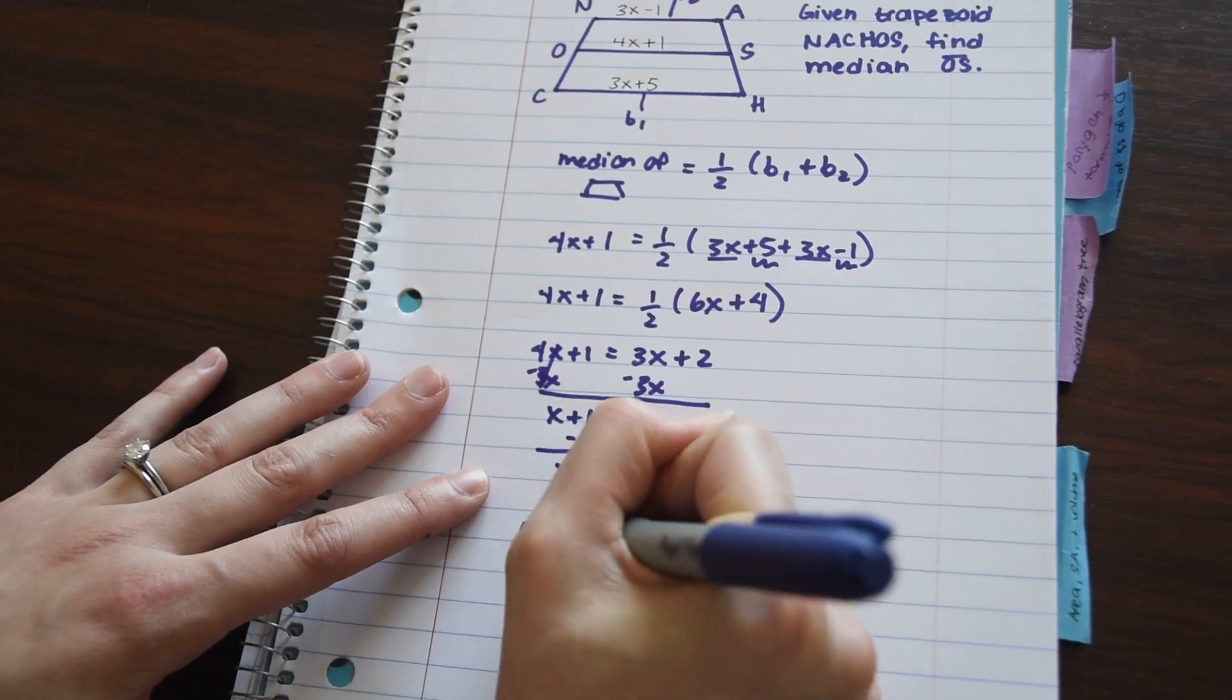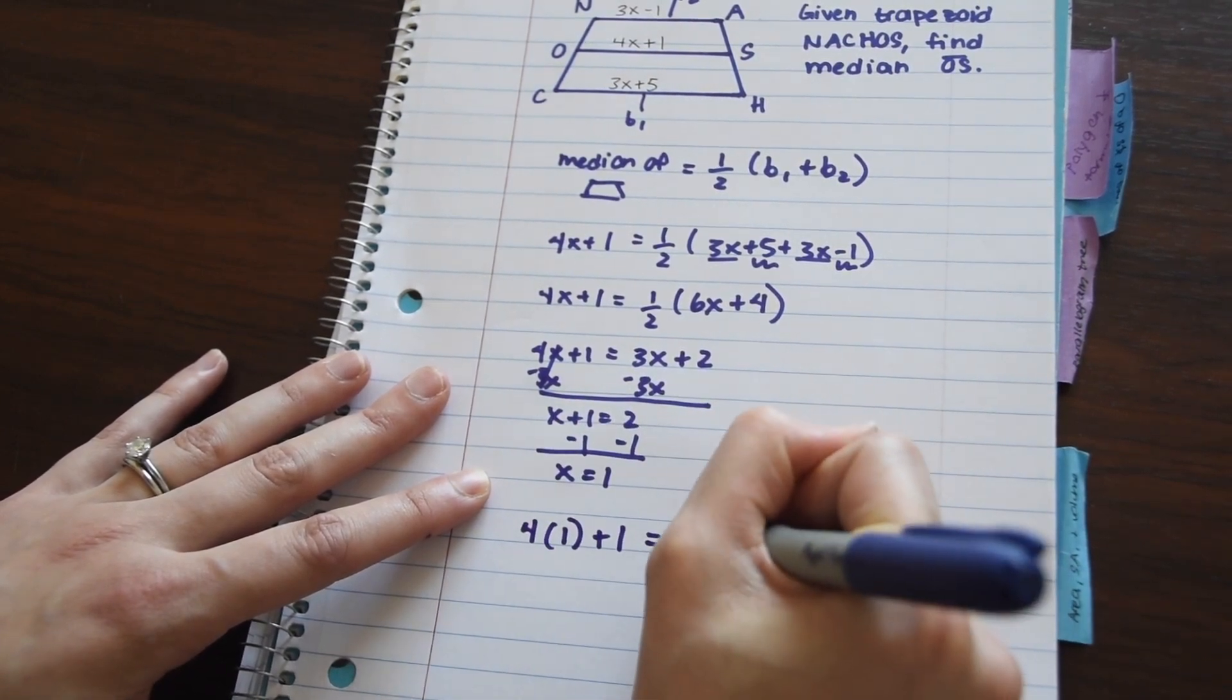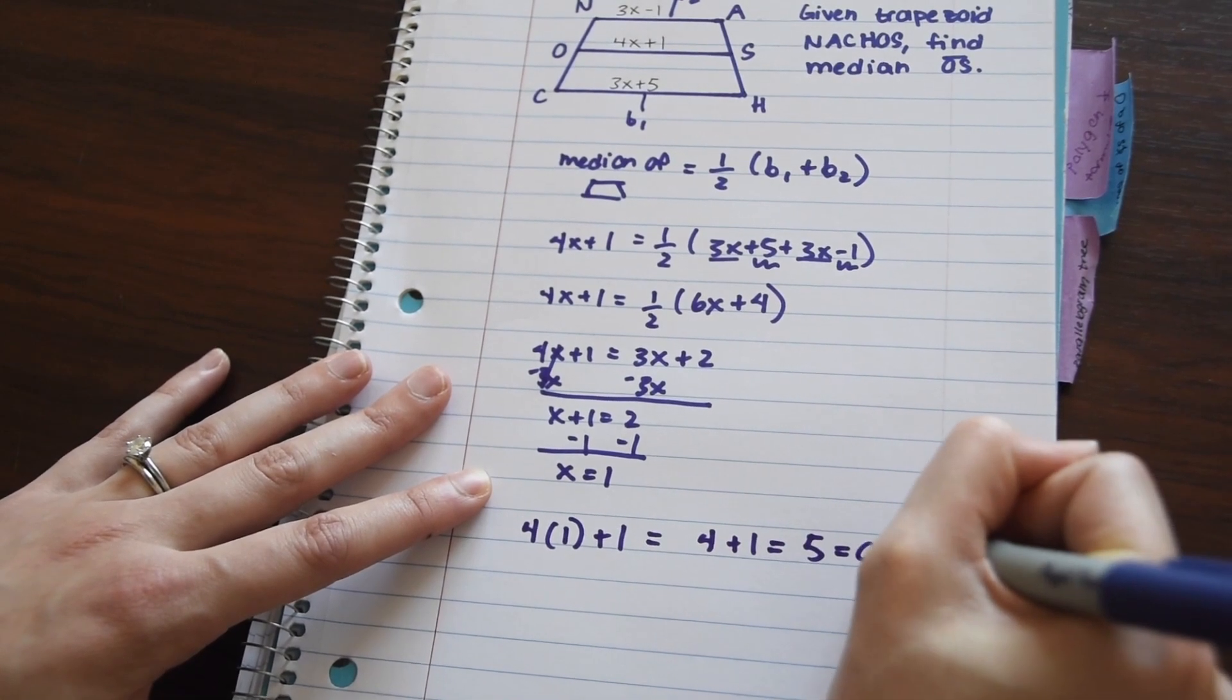So the value of the median is 4 times 1 plus 1, which is just going to give us 4 plus 1, which is 5, which is our median, OS.